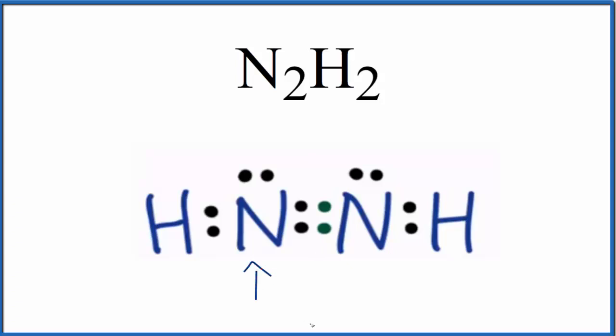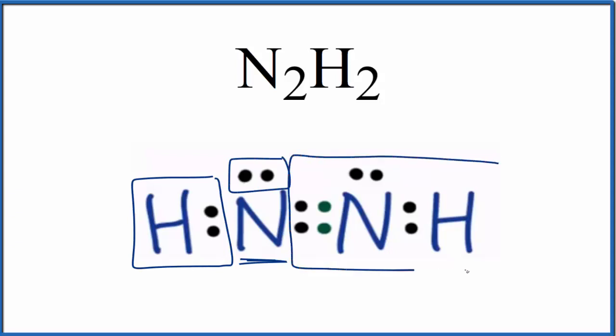So if we look at this nitrogen right here, we see we have a hydrogen attached, this single bonded hydrogen. We have a lone pair, and then we're going to treat this whole thing over here, this double bond to the nitrogen and we have the hydrogen, as just one connection or one item. So we really have these three things here attached to the nitrogen.